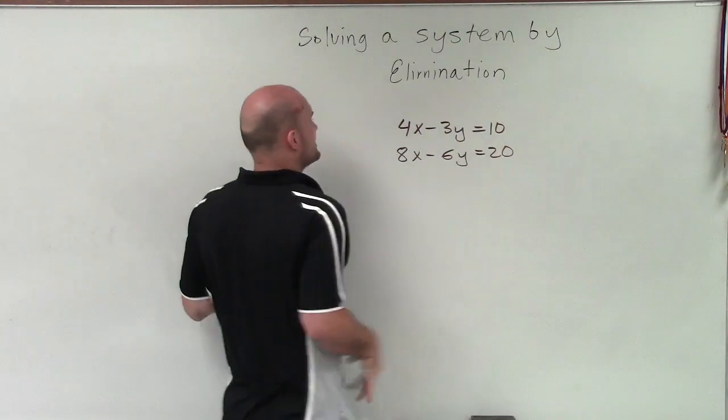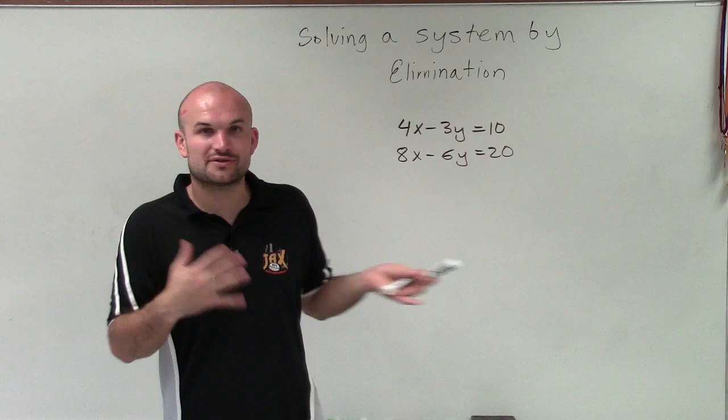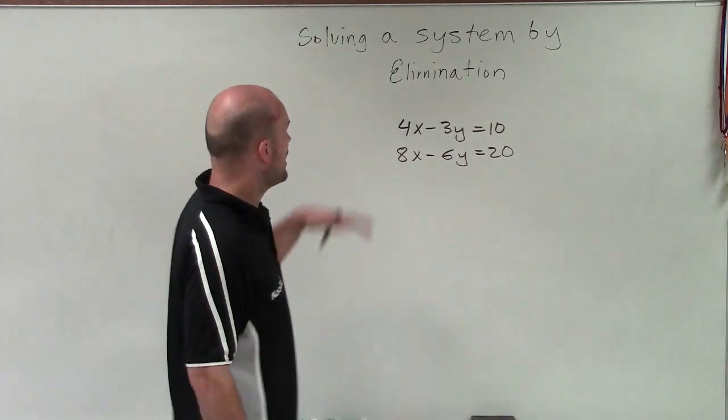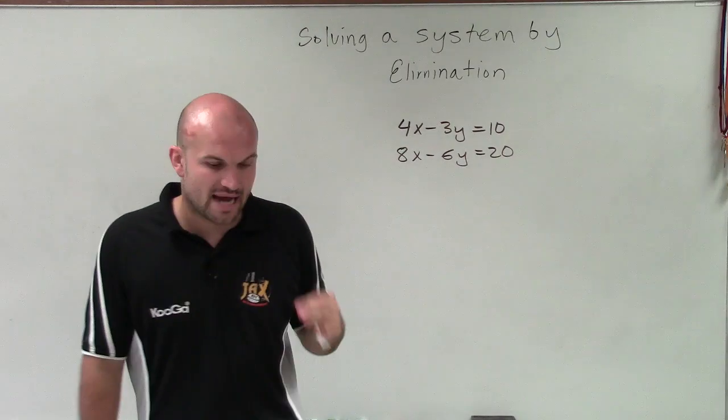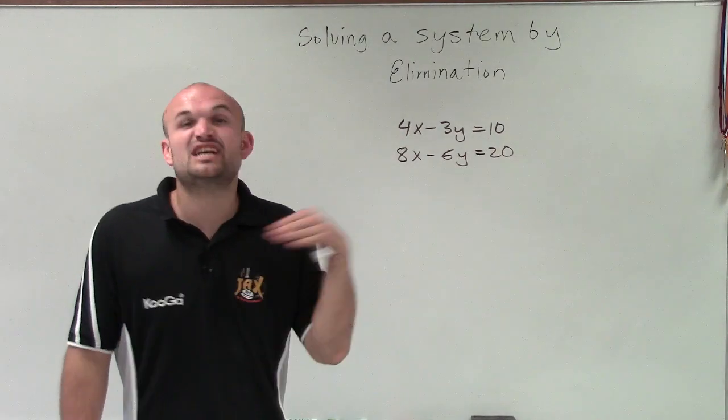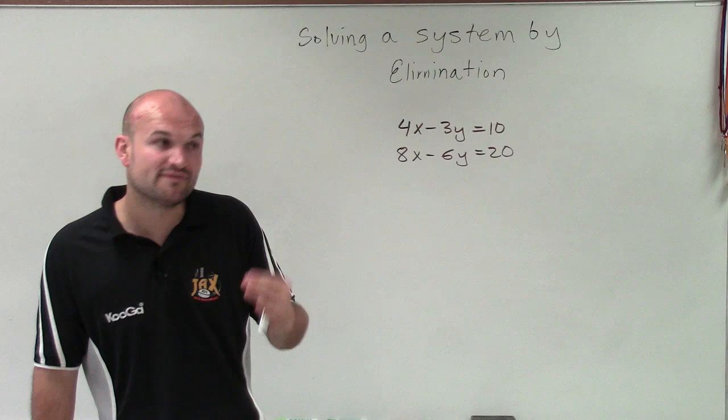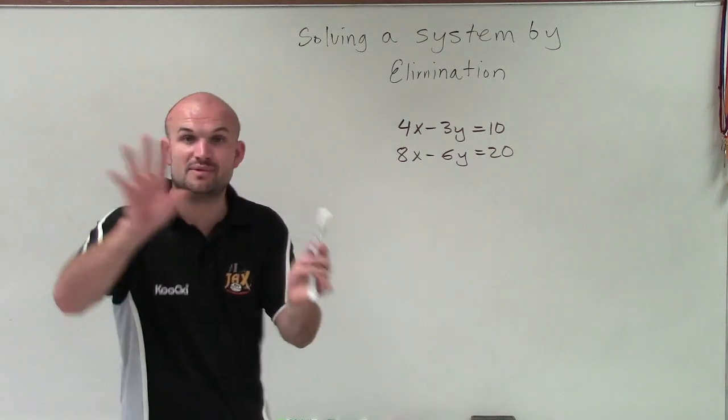So when I look at this, I say, all right, I can either choose to eliminate the x or the y. It doesn't really matter. In this case, I'll just choose to eliminate the x. So what I want to do then is I want to create equivalent equations, but equivalent equations that are going to have the same variable. And let me just give you an example.